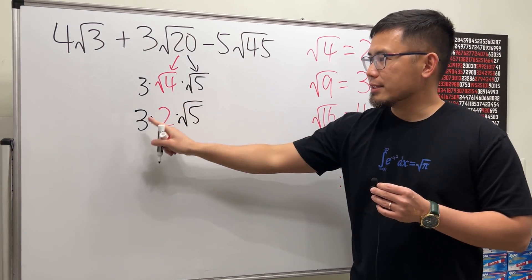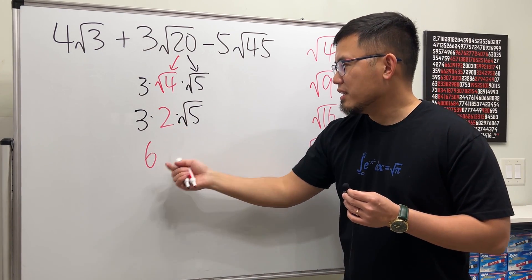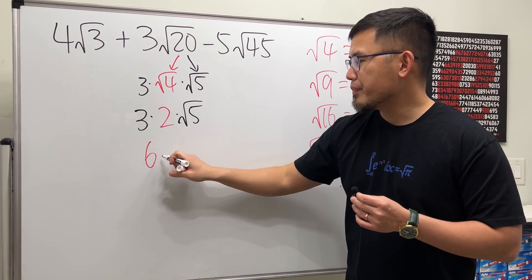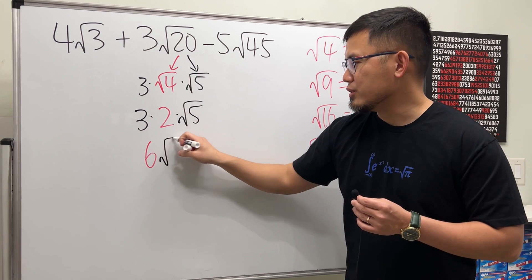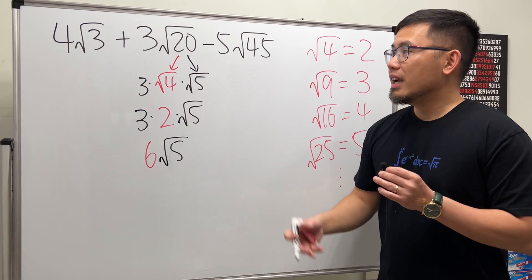So we have 3 times this right here, which is just a regular 2, and then times √5. 3 times 2, that's how we get that 6. So we have 6 times √5, and you don't need to write down the dot. You can just put this down as 6√5, just like that.